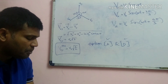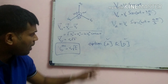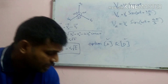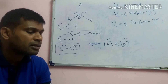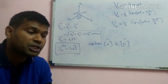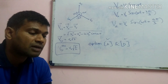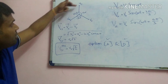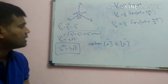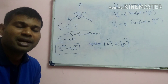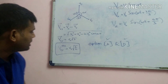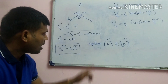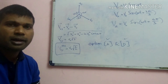Options A and D are correct for question 9. Option D states the RMS reading is independent of the choice of the two terminals, because whether you measure VXY, VYZ, or VXZ, the answer is the same: V₀√3/2.